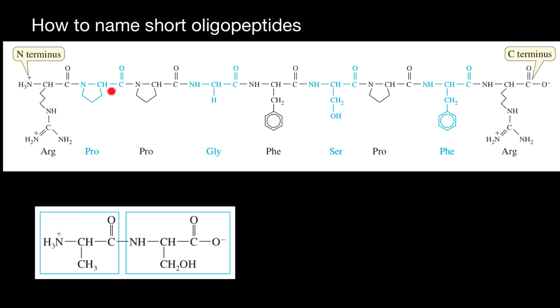We have one, two, three, four, five, six, seven, eight, nine amino acid residues. So this oligopeptide consists of nine amino acid residues. If we would have more than 10, then we would call such molecule polypeptide. If less than 10 amino acid residues, then we call oligopeptide.